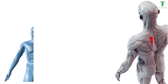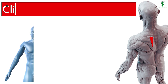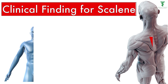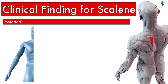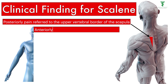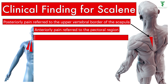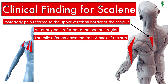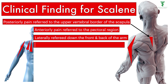Clinical findings and associated symptoms: Posteriorly, pain is referred to the upper vertebral border of the scapula and the area medial to it. Anteriorly, aching pain is referred to the pectoral region. Laterally, referred pain travels down the front and back of the arm, skips the elbow, and reappears on the radial side of the forearm, and may extend to the thumb and index finger.